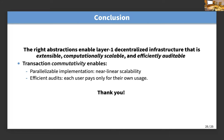Just as a takeaway: if we pick the right abstractions, we get nice properties down the road. Not only can we get something computationally scalable, we can get something efficiently auditable. And everything comes down to picking commutative blocks of unordered transactions. Thank you very much.